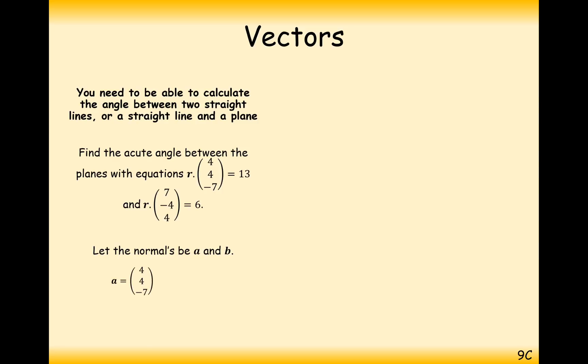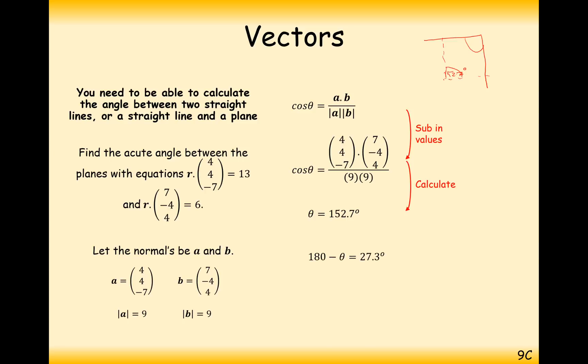The normal A is (4, 4, -7), and the normal B is (7, -4, 4). The modulus of them are 9 and 9, respectively. So plug this into your formula, apply your formula, and you get theta is 152.7 degrees. So that would be the angle at which the two normals meet. Our two normals are going to be meeting at 152.7 degrees. So now to find this angle around here, we do 180 minus it, so we get 27.3 degrees. That's the answer, that's all we have to do. Find the angle between the two perpendicular lines, and then do 180 minus it.